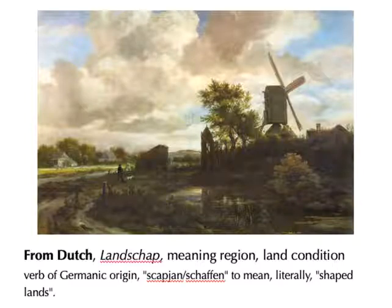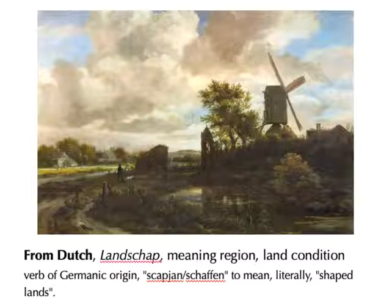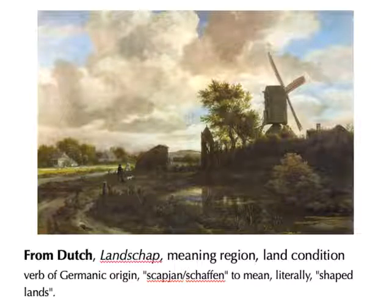So: landscape — 'land' is land, and then '-schap' or '-skap' means shape. Shaped land. In other words, a landscape is something that has been created in relation to the land.